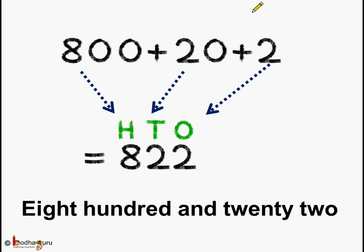So for converting it to standard form, start from the lowest value, which is 2 here. Let's put 2 at the ones place. How many tens? 2 tens. So put 2 at the tens place. Lastly, how many hundreds? There are 8 hundreds. So what do we get? 822. So this is the standard form of numbers.